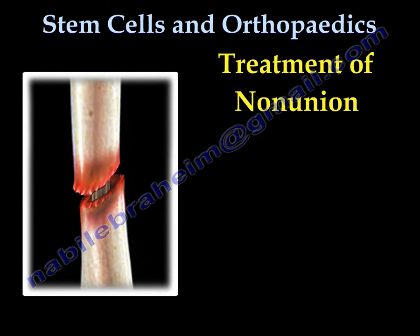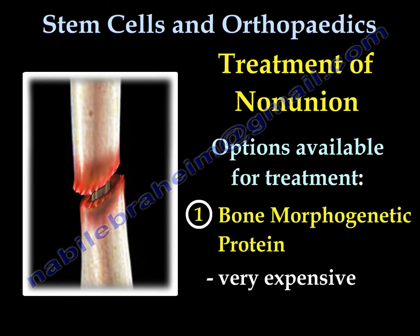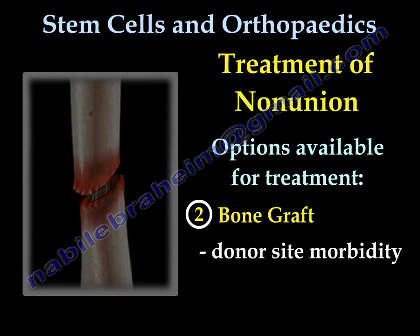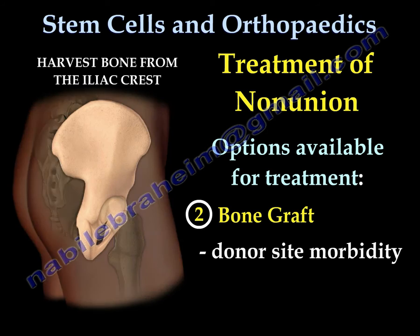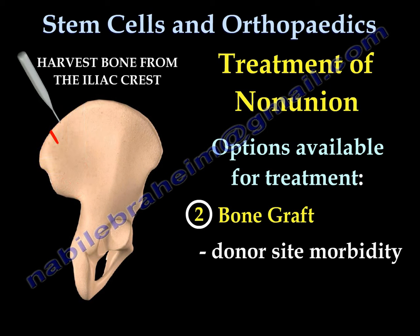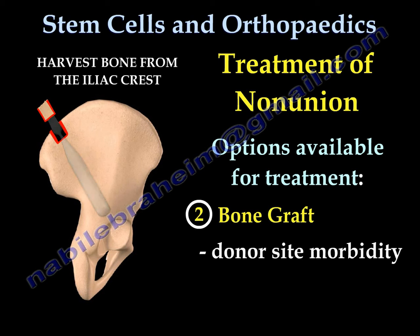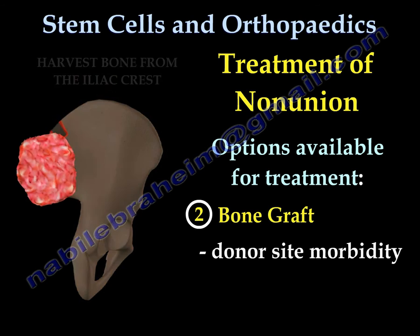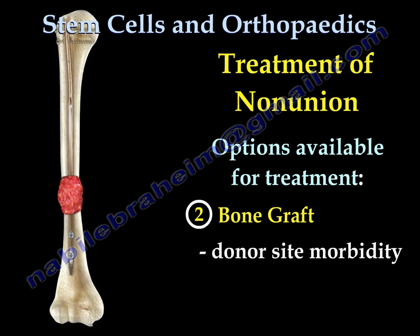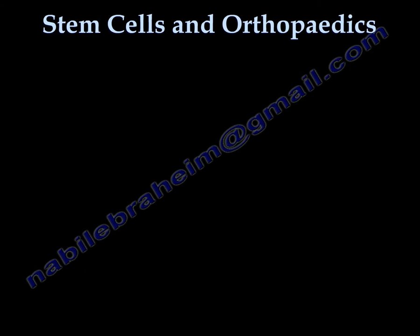Options available for treatment: Number one, bone morphogenic protein — very expensive. Number two, iliac crest bone graft, which has donor site morbidity; you take pieces of bone from the iliac crest and put it at the site of the nonunion. Number three, stem cells.